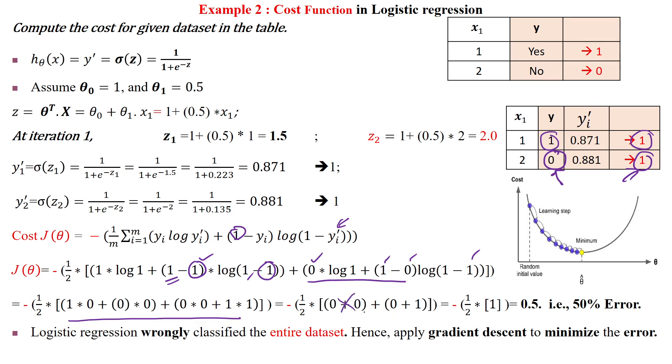When substituting values, the calculation gives 0.5, meaning 50% error. The second sample is misclassified while the first is correctly classified. Out of 2 samples, 1 is misclassified, giving 50% error.